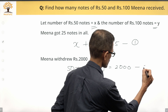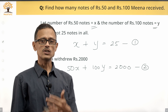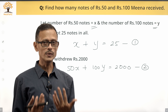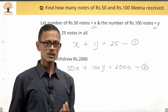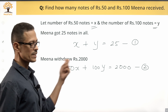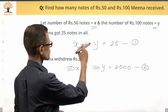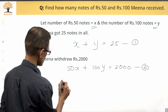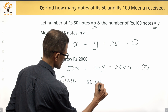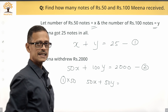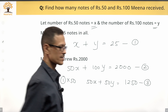Let's call that equation 2. We now have a pair of linear equations in two variables. We'll solve these using the elimination method — eliminating one variable from the two equations. I'm going to multiply equation 1 by 50, giving us 50x plus 50y equals 1250. Let's call this equation 3.